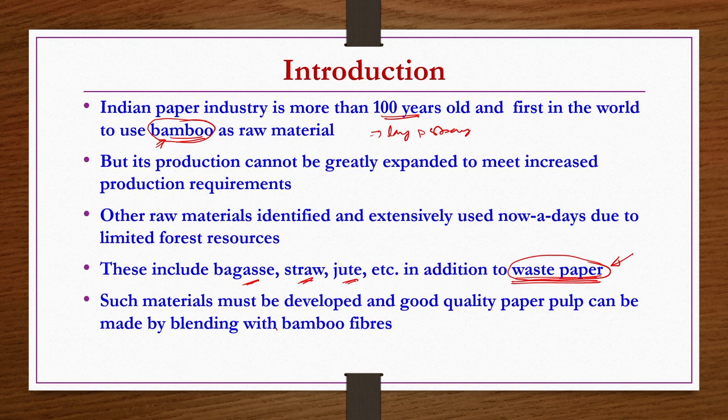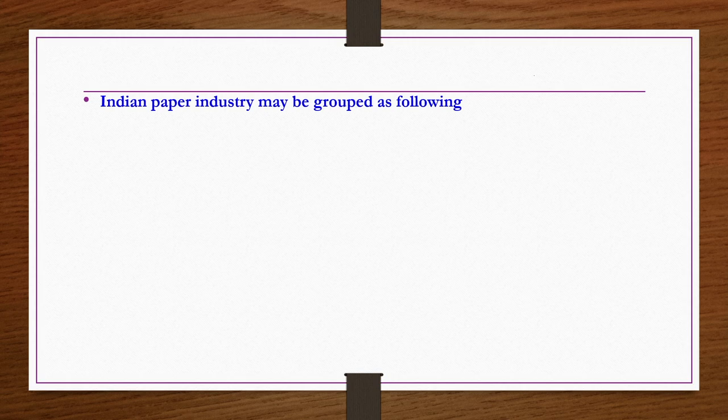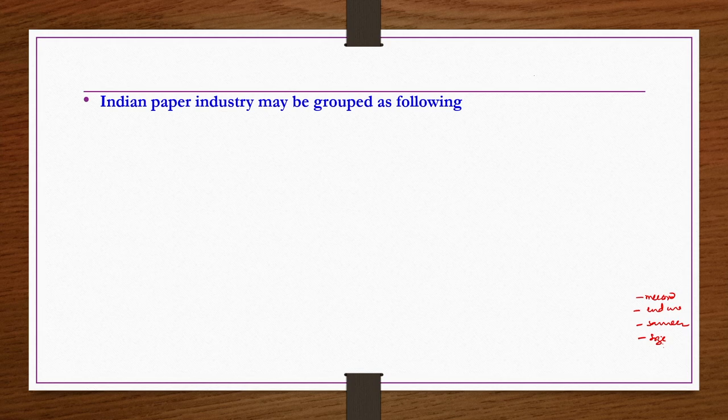Such materials must be developed and good quality paper pulp can be made by blending with bamboo fibers. Now we discuss the grouping of Indian paper industry. Paper industry can be grouped in different ways: by the method of production, by end use, by sources or raw material, or by the size of the plant. The grouping discussed here is primarily based on the size of the units as well as the source of such industries.